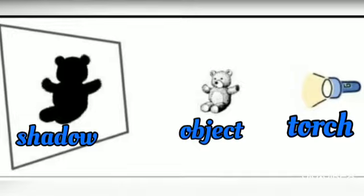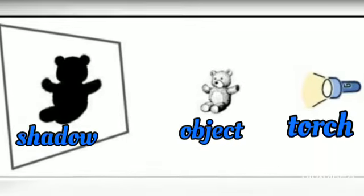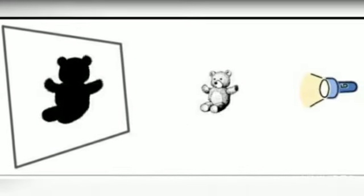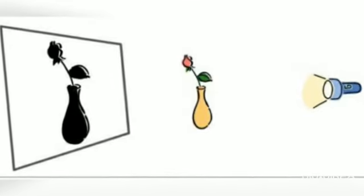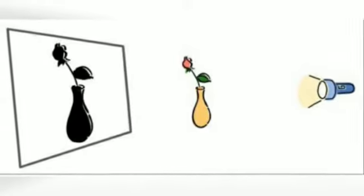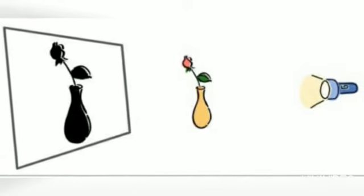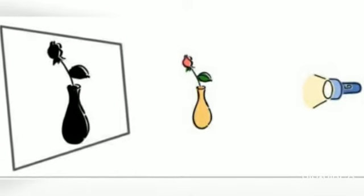As in this image, the source of light is a torch and the object is a teddy. It is blocking the light, so the shadow is formed. The object is coming in front of the torch. Same as in this image — in front of the torch there is a vase, and it is blocking the light, so the shadow is formed there.